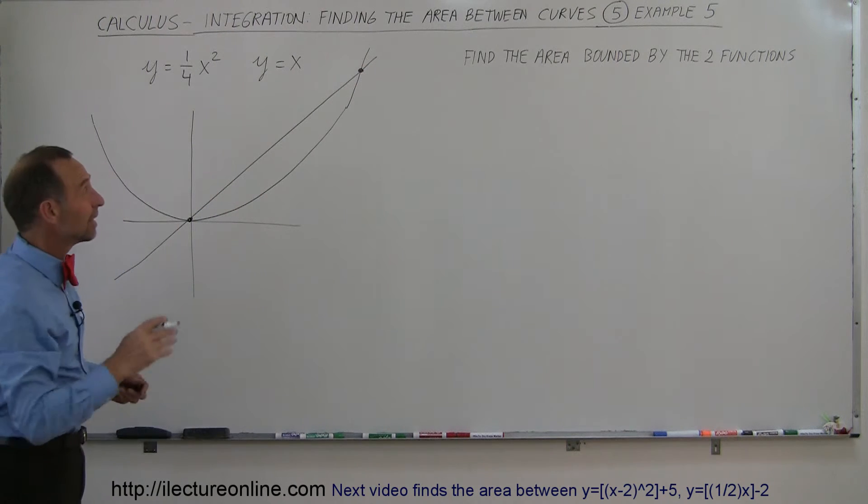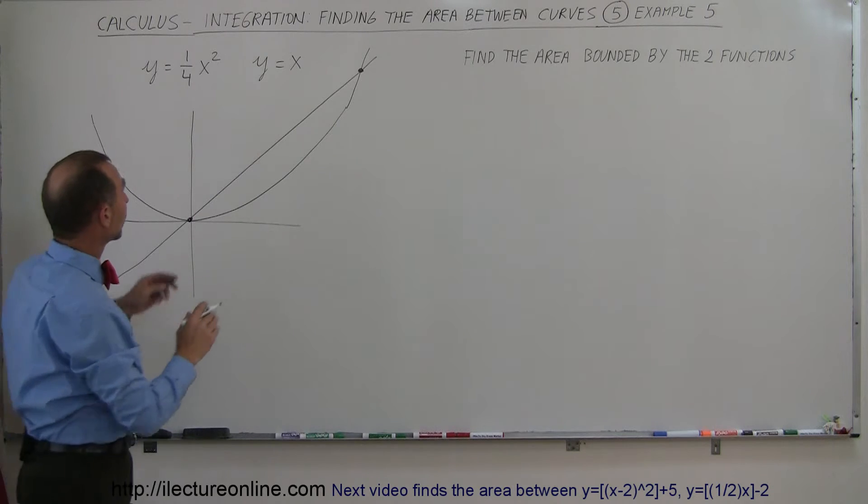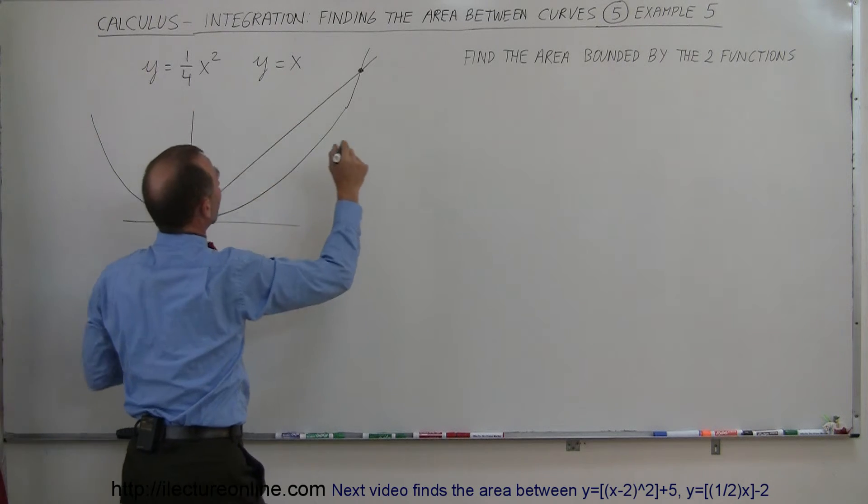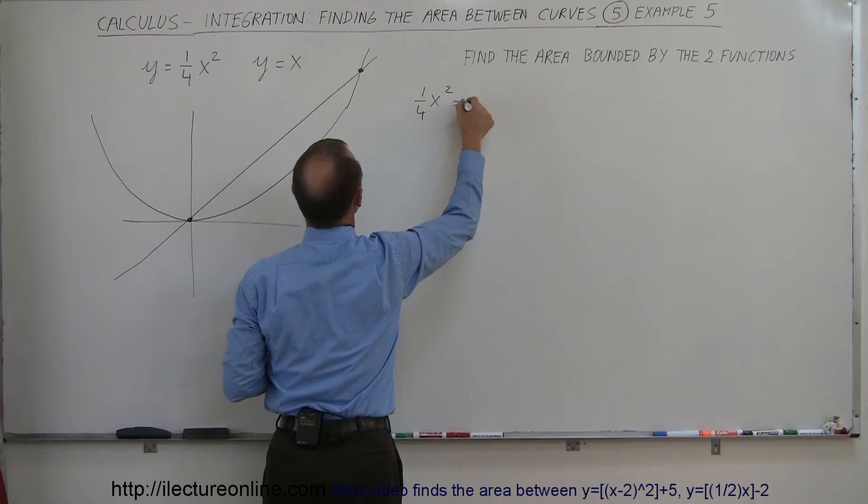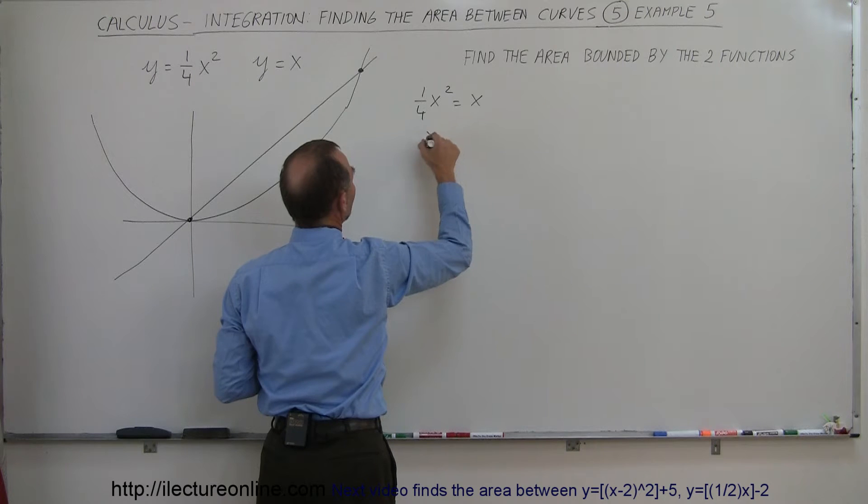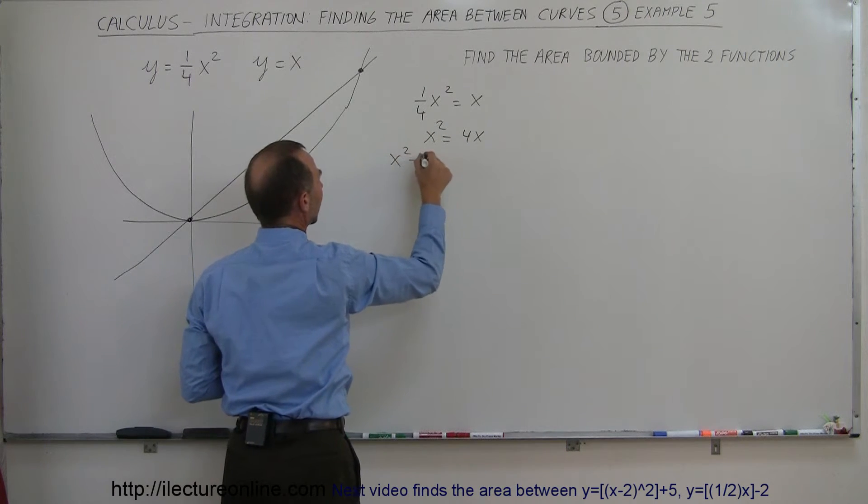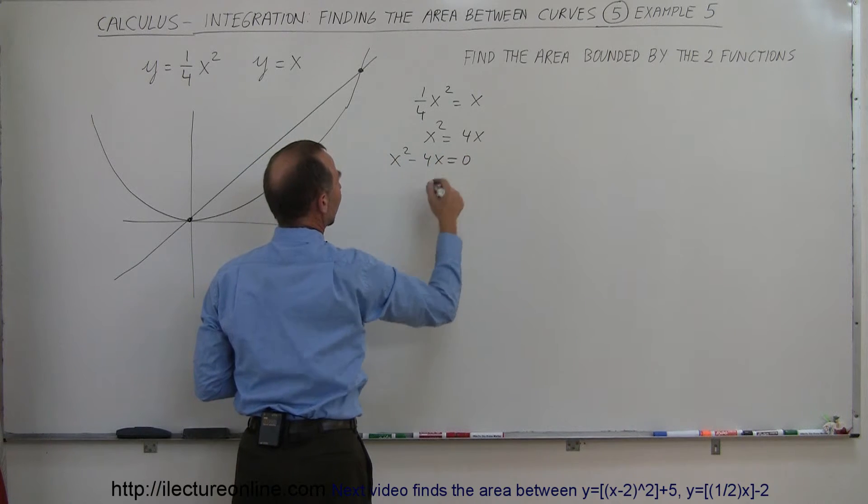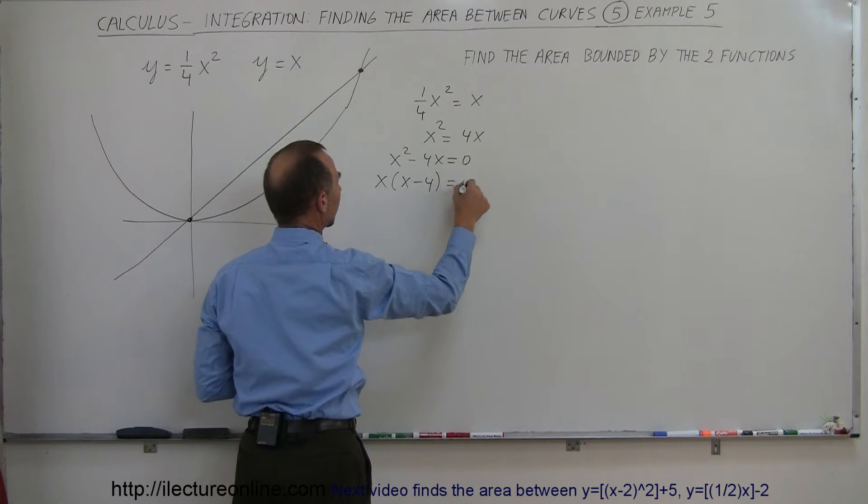Let's find the x value where they cross. We're going to set those two equations equal to each other, so we have 1 quarter x squared equals x. Multiply both sides by 4, we get x squared equals 4x. Move this over, we get x squared minus 4x equals 0. Factor out an x, we get x times x minus 4 equals 0.